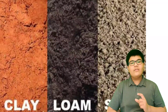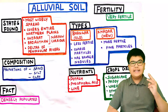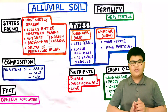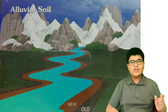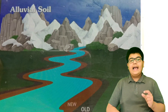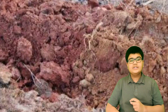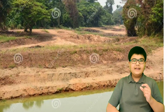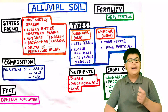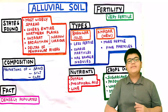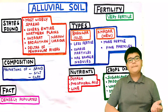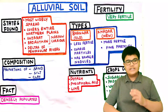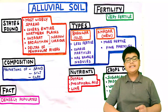Alluvial soil is composed of various proportions of sand, silt, and clay. It is of two types: Bhangar and Khadar. Bhangar is the old alluvial soil with very coarse particles and some kankar nodules, making it less fertile. Khadar is the new alluvial soil with very fine particles and is more fertile. On the whole, alluvial soil contains nutrients such as potash, phosphoric acid, and lime, making it very fertile. Crops such as sugarcane, paddy, wheat, pulses, and oilseeds grow here, making these regions very densely populated.